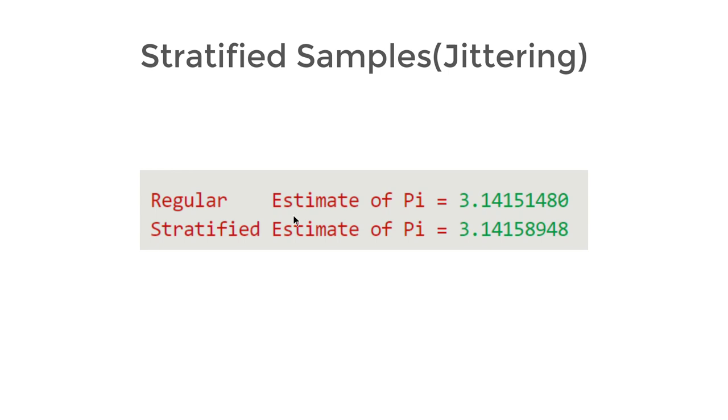Unfortunately, this advantage decreases with dimensions of the problem. For example, with 3D sphere volume version, the gap would be less. This problem is called Curse of Dimensionality. Since the book goes into very high dimensionals, the book won't stratify in the later chapters.